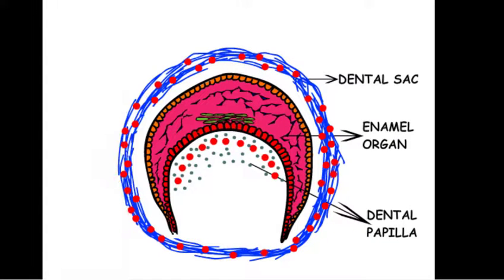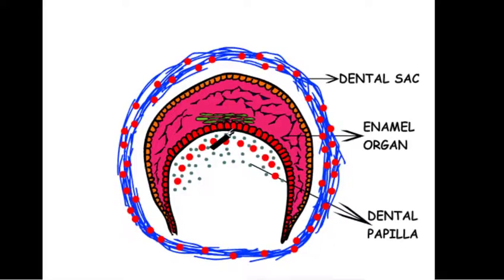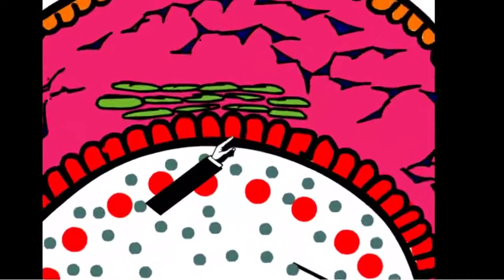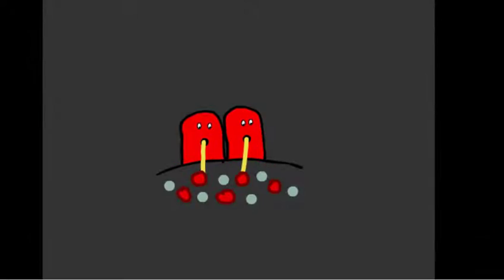Here you can see the enamel organ that is surrounded by the dental sac and in its concavity it contains the dental papilla. The pointer indicates towards the ameloblast cells. Here you can see the ameloblast cells deriving their nutrition from the dental papillary blood vessels.